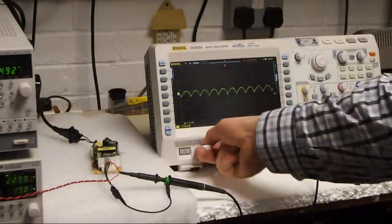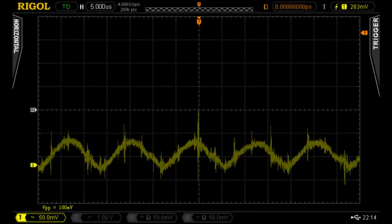This is a 4 giga sample per second scope and it may show things that are too fast to worry about, things that can easily be filtered out in the final product.